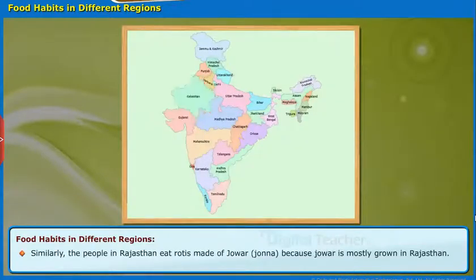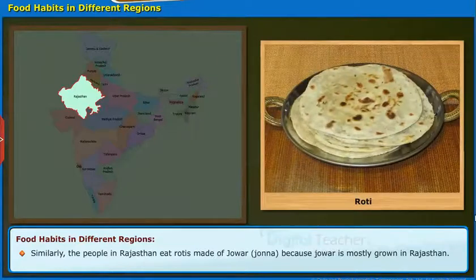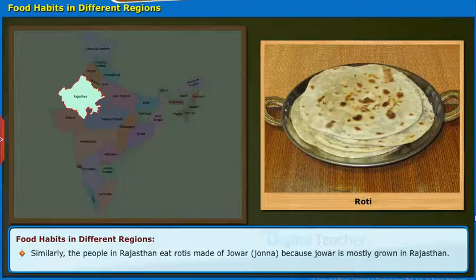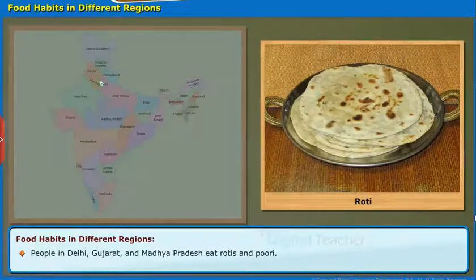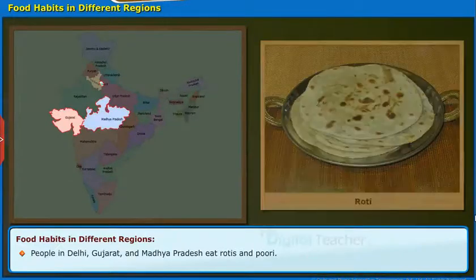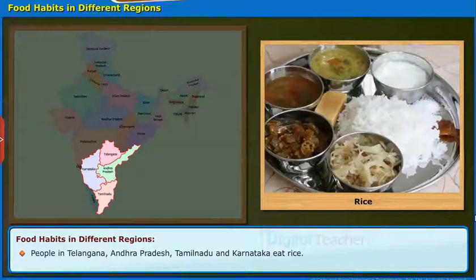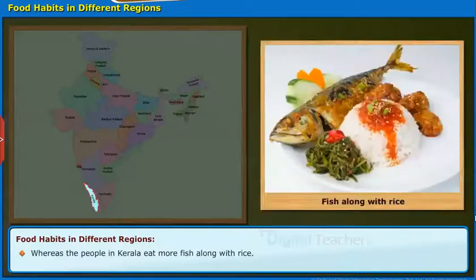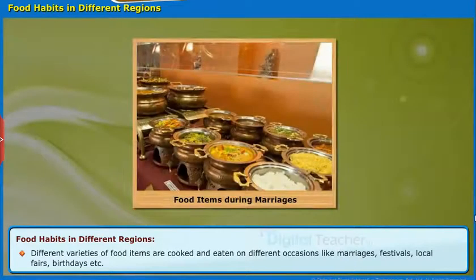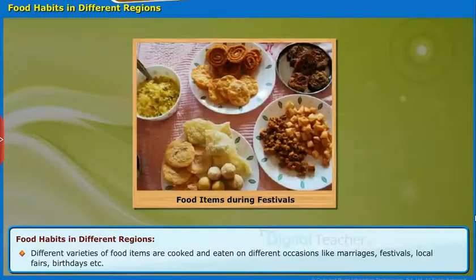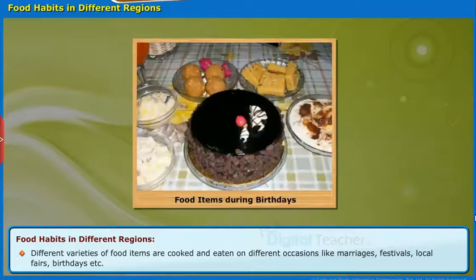Similarly, the people in Rajasthan eat rotis made of jowar because jowar is mostly grown in Rajasthan. People in Delhi, Gujarat and Madhya Pradesh eat rotis and puri. People in Telangana, Andhra Pradesh, Tamil Nadu and Karnataka eat rice. Whereas the people in Kerala eat more fish along with rice. Different varieties of food items are cooked and eaten on different occasions like marriages, festivals, local fairs, birthdays, etc.